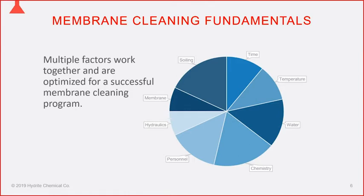Membrane manufacturers limit the temperature that can be used to clean. They usually have high-end limits, but too low is bad as well. We'll discuss reaction kinetics — how chemistry reacts with soil and how that's dependent on temperature. Water is the biggest part of the cleaning equation because it makes up about 99% of the cleaning solution, so we need a good water supply.